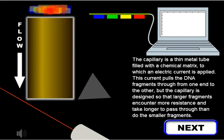The capillary is a thin metal tube filled with a chemical matrix to which an electric current is applied. This current pulls the DNA fragments through from one end to the other, but the capillary is designed so that larger fragments encounter more resistance and take longer to pass through than do the smaller fragments.